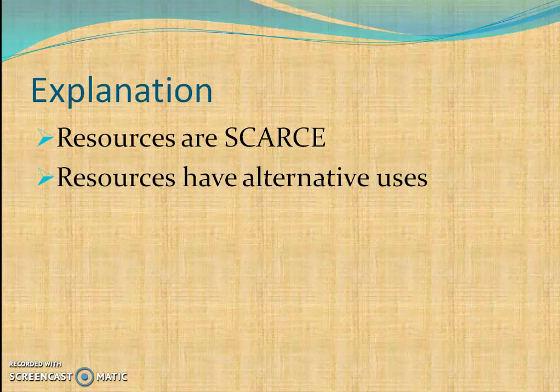This happens because the resources we have are scarce in nature, while wants are unlimited. All these scarce resources have alternative uses. For example, a piece of wood can be used to make a duster, a table, or any other commodity made of wood. Once we decide to make a table with a piece of wood, we cannot use that same piece of wood to make any other commodity.